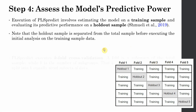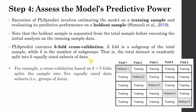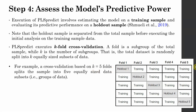There are five folds here, and PLS Predict executes k-fold cross-validation. A fold is a subgroup of the total sample — the total dataset is randomly split into k equally sized subsets of data. For example, here we have five folds where k equals 5, although normally 10 is recommended. Each fold is divided into hold-out and training sample.